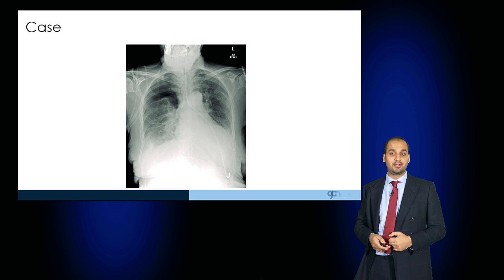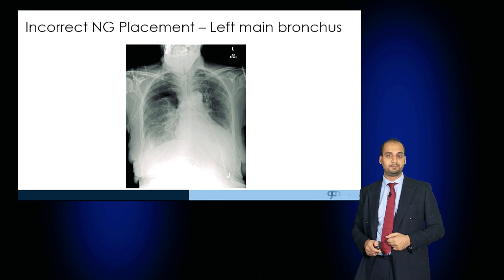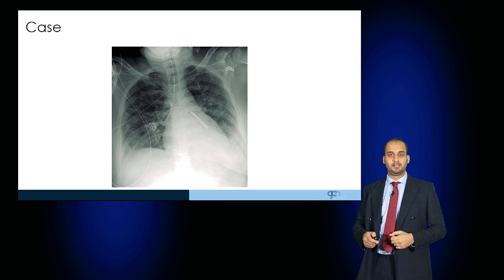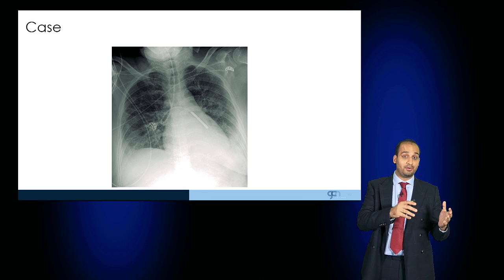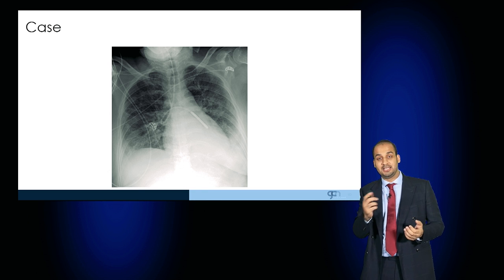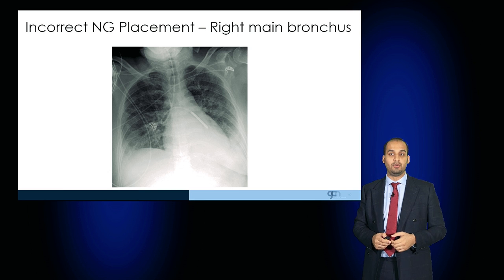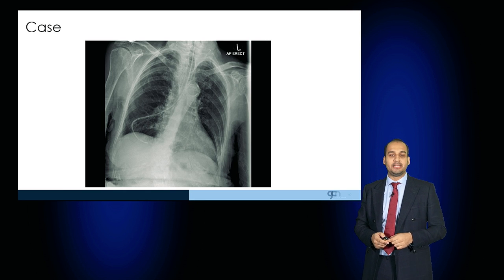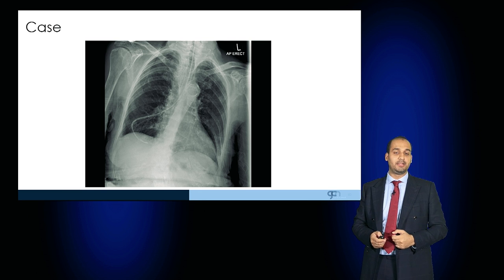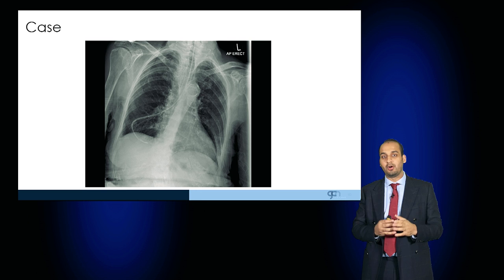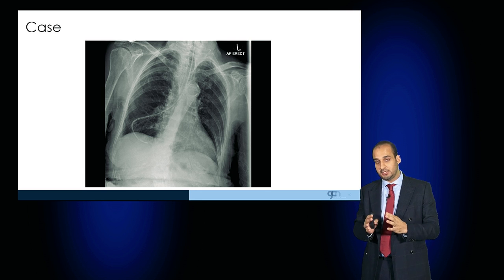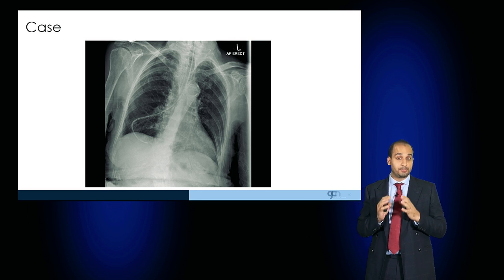This is another case of an incorrectly sited NG tube — this one has gone into the left main bronchus. Here is an NG tube that unfortunately passed into the right bronchus, curved there, and then passed into the left bronchus — again very unsafe and needs to be removed. And here is another one. There are a lot of these to demonstrate how easy it is for the NG tube to be sited in the wrong place, and how important it is to have a senior review prior to feeding.